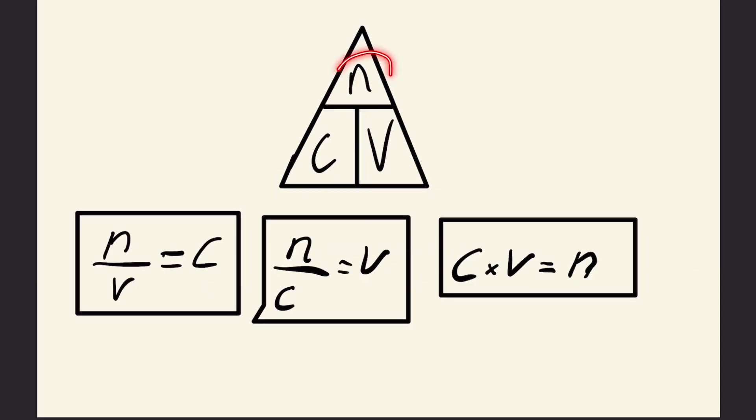The next triangle relates moles, volume, and concentration to each other. Volume is generally in liters because concentration is in molarity, which is moles per liter. If we divide moles by liters, we end up with concentration in moles per liter.